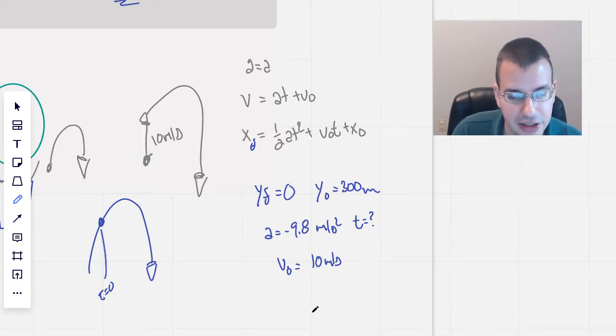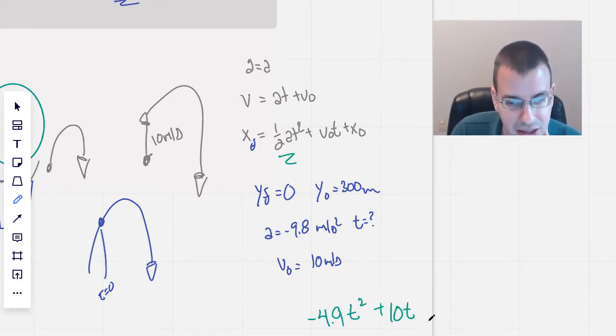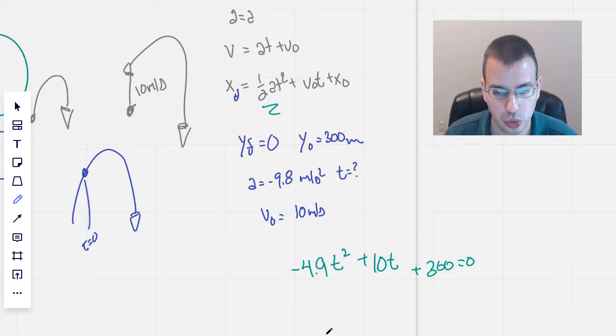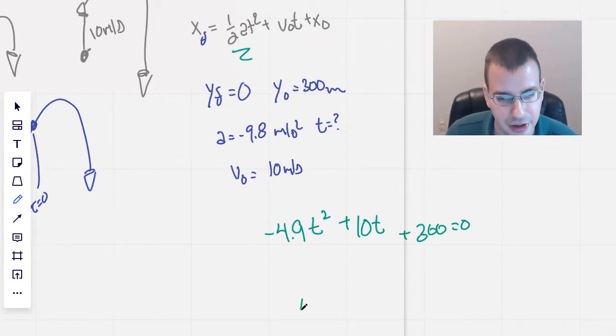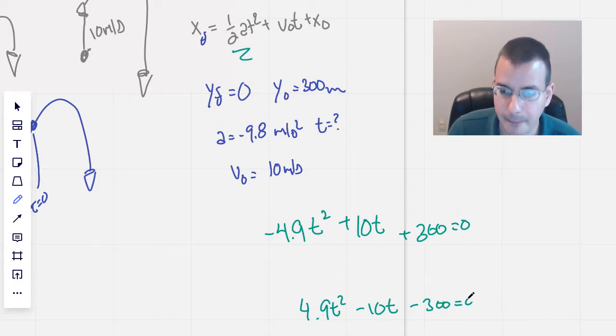So looking at this again, we have negative 4.9 t squared plus 10 t plus 300 equals 0. I am going to rearrange this so that the a term is positive. It doesn't have to be. I just feel a little bit more comfortable when my first term is positive. So just multiply everything by negative 1.